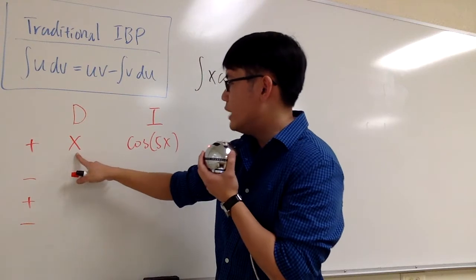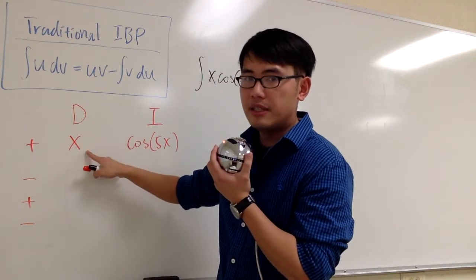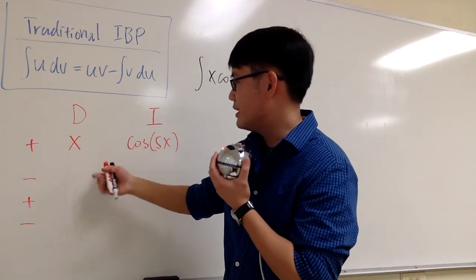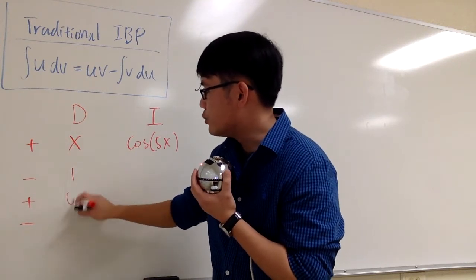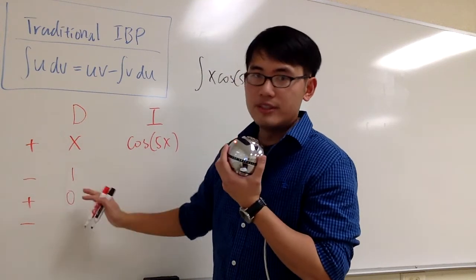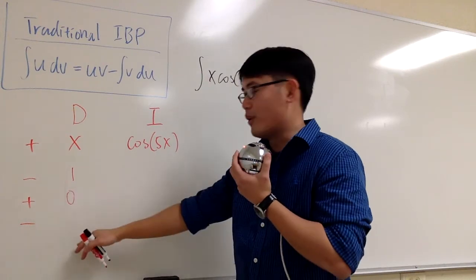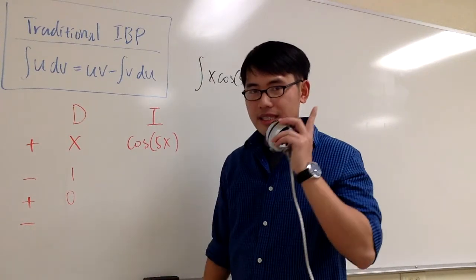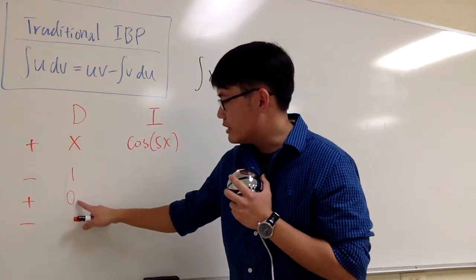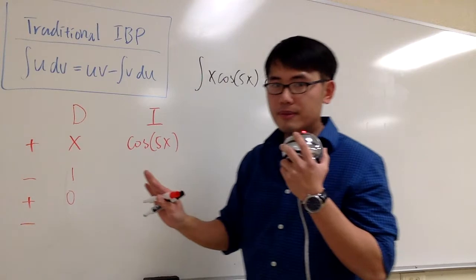And now let's look at x. We have to keep differentiating the x. The derivative of x equals 1, and the derivative of 1 equals 0. We can stop right here, because if you keep going, the derivative of 0 is just 0. So this is the first stop. If you see a 0 on the D column, we stop.